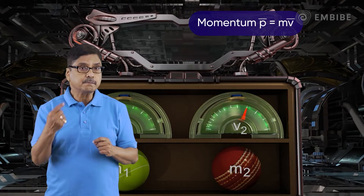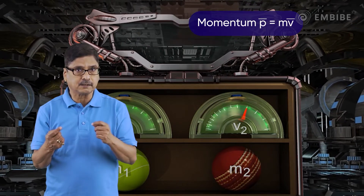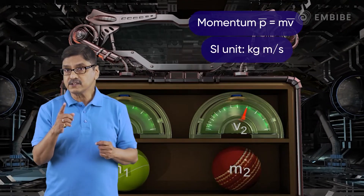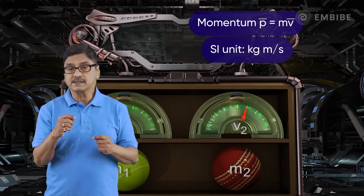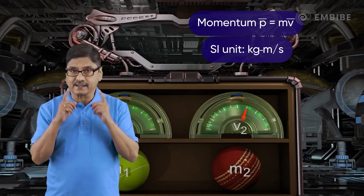With the help of these examples, we can define a new physical quantity called momentum. The momentum P of a body is defined as the product of its mass m and velocity v. The SI unit of momentum is kilogram meter per second.